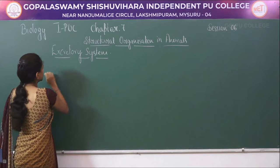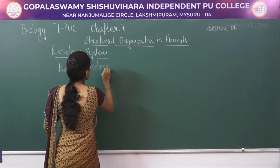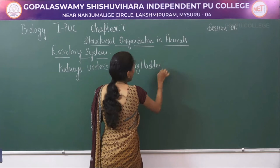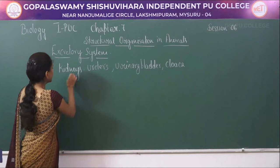In the case of frog, the excretory system includes kidneys — because they are in pairs — ureters, urinary bladder, and cloaca. These are the components or organs which are involved in the excretory system of a frog.